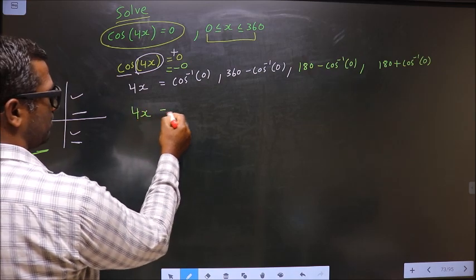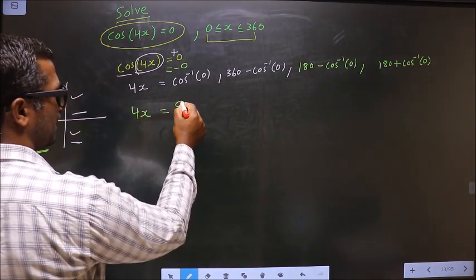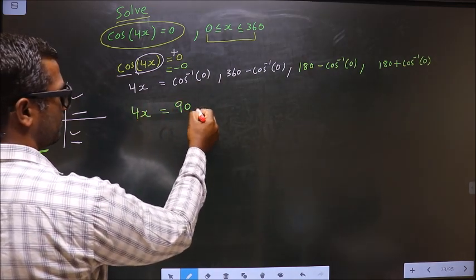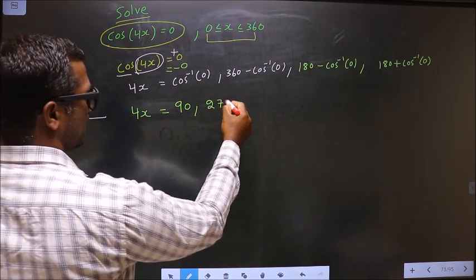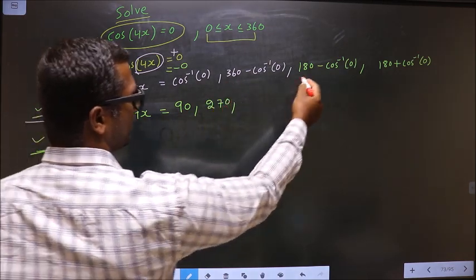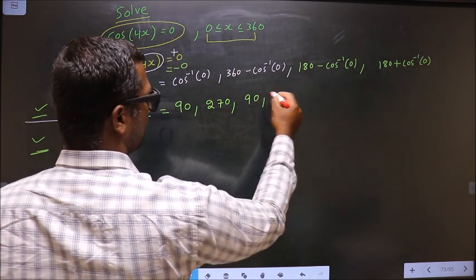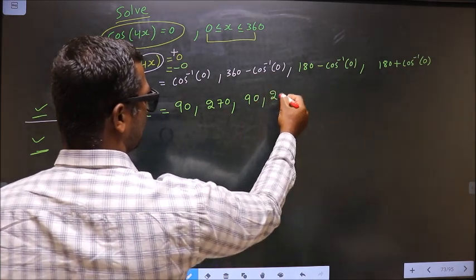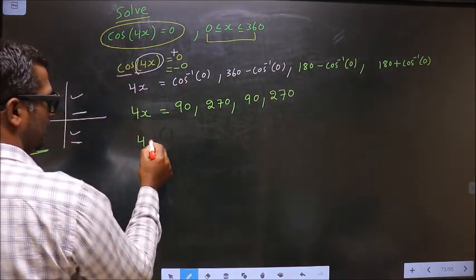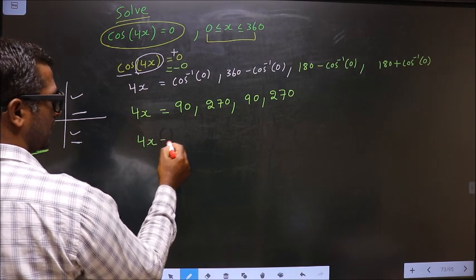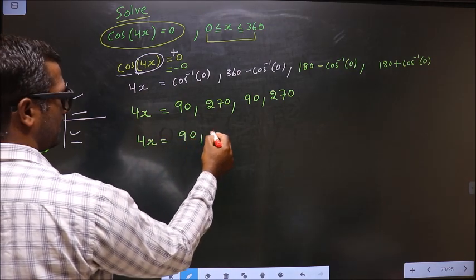Now calculating: 4x equals cos inverse of 0, which gives 90 degrees. The fourth quadrant formula gives 270 degrees. The second and third quadrant formulas also yield 90 and 270 respectively. So the distinct values we obtain for 4x are 90 and 270.